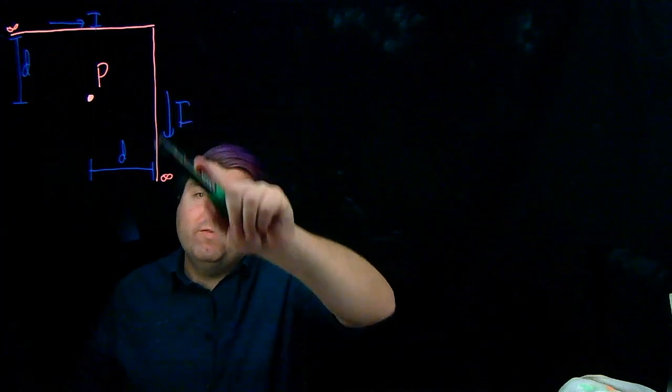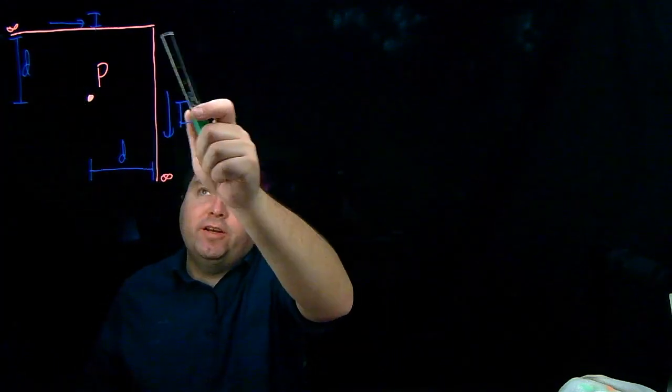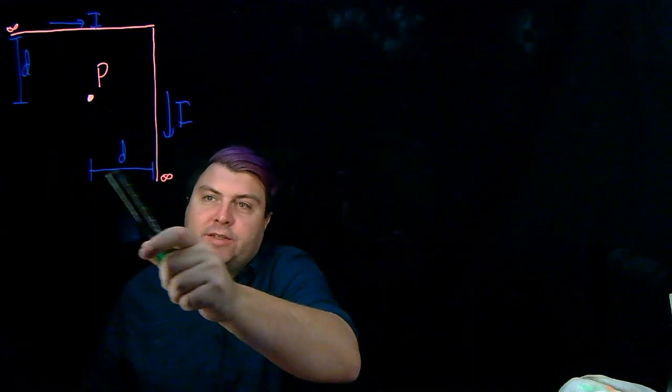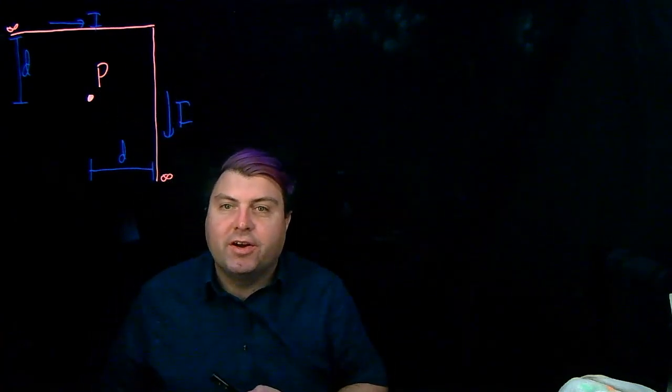Here we have an infinite wire that's been bent into a corner. So it goes from infinity to here, down to infinity to here. We want to look at a point P at distance d from both of these bends, from the closest approach of these two things.